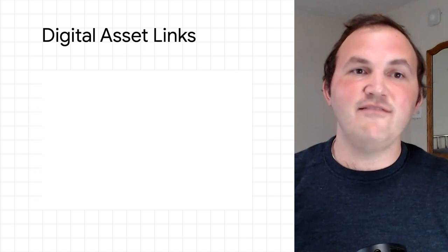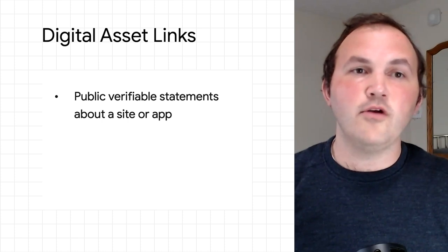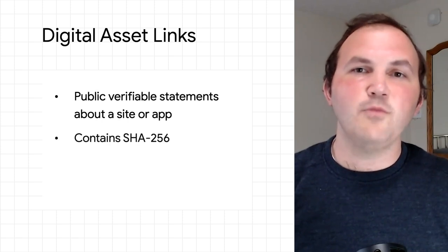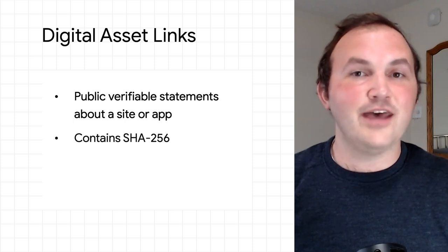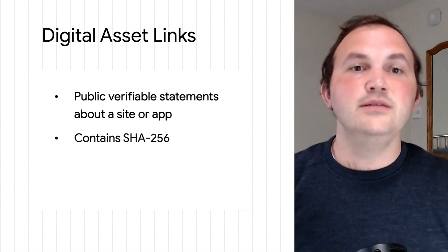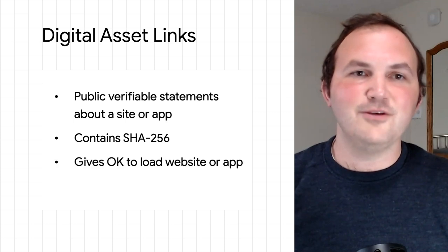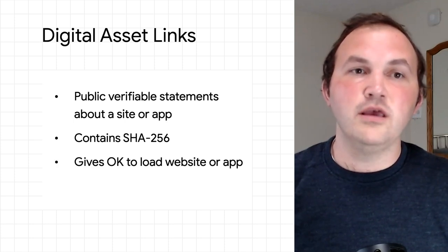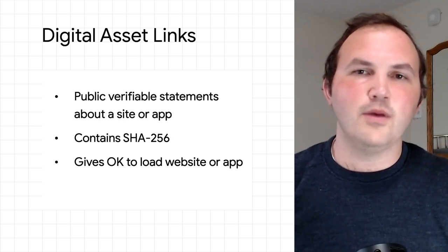Hi, if you're a web developer looking to bring your web app to Android and Chromebook devices via the Play Store, you may have heard of Trusted Web Activities. Part of having a Trusted Web Activity is having a way to allow an app or a website to make public, verifiable statements about other apps or websites. This allows your website to declare that it is related to an Android app through what is known as a digital asset link and vice versa. Digital asset links tell the browser that it's okay for your app to display your website full screen, and also tell Android that it's okay to use your app to handle any intents to your website.